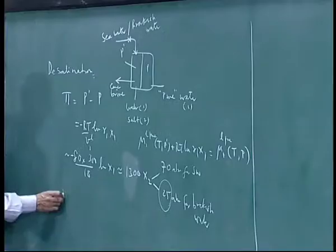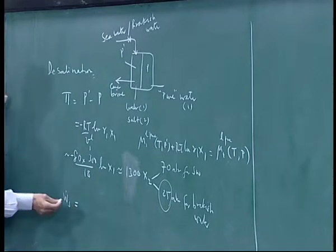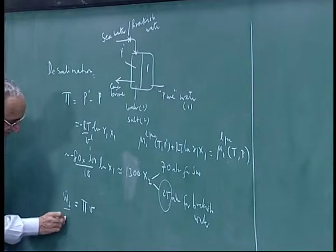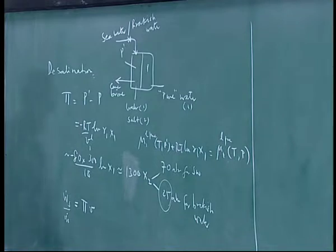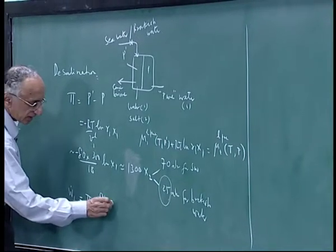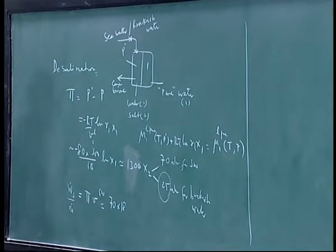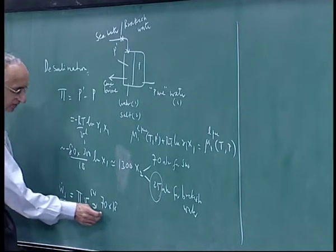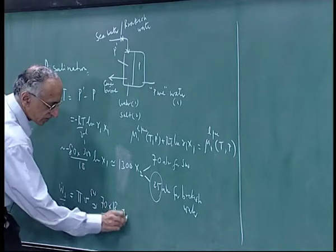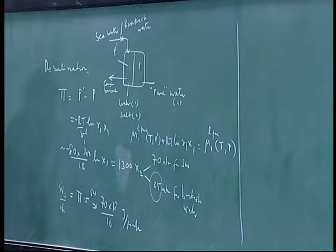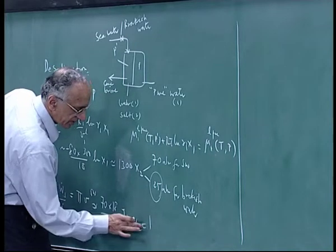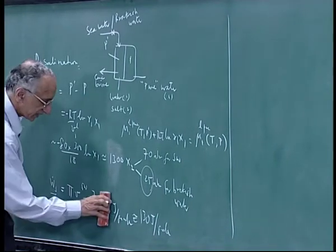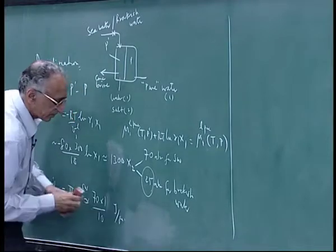The thing I have pointed out was that Ws dot, the rate at which work is done per unit produced, would be pi into V. For example, Ws dot by M dot would be pi into V, which would be for seawater osmosis 70 atmospheres into 18 cc per gram mole. If you are doing this in joules, it is about 80 cc atmospheres is 8 joules. So divided by 10 if you like, roughly this is joules per gram mole. So this is about 130, or if you are doing it per gram, just put 1 per gram. So this is about 7 joules per gram.